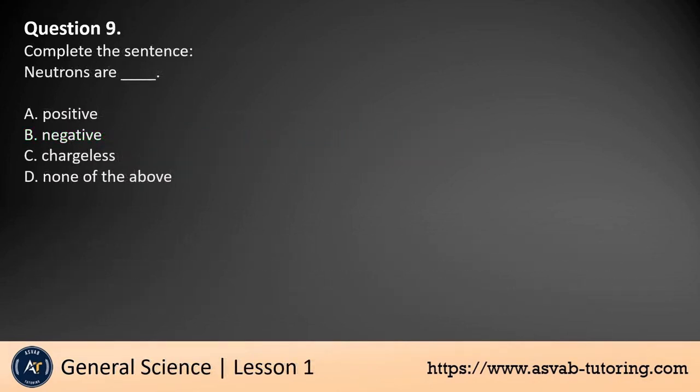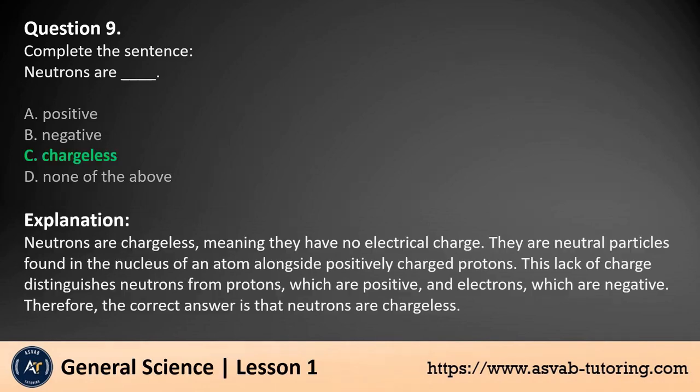Question 9. Complete the sentence. Neutrons are: a. Positive. b. Negative. c. Chargeless. d. None of the above. The answer is c.